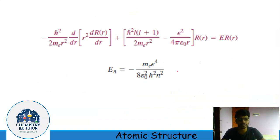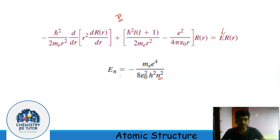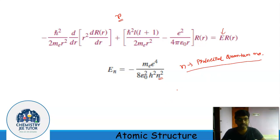While solving the Schrödinger wave equation, we can see that the energy-related term is only in the radial part. So my energy will depend on the radial part, and since the only variable in this part is r, my energy will depend on only one quantum number — that is, the principal quantum number n. Solving this equation, we get the energy expression as E = −me⁴ / (8ε₀²n²), where n is the principal quantum number. So energy depends only on the radial part, not on the angular part, and it depends on the principal quantum number.